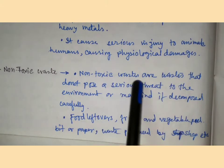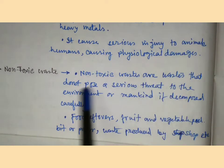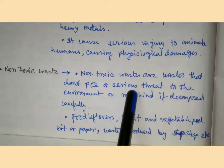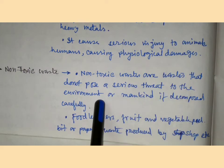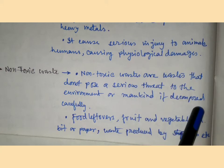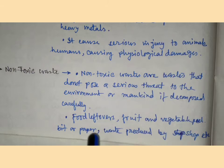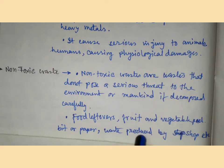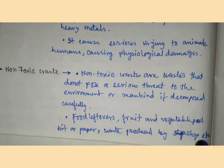Non-toxic waste includes waste that does not pose a serious threat to the environment or mankind if decomposed carefully. Examples include food leftovers, fruit and vegetable peels, bits of paper, and waste produced by shops.